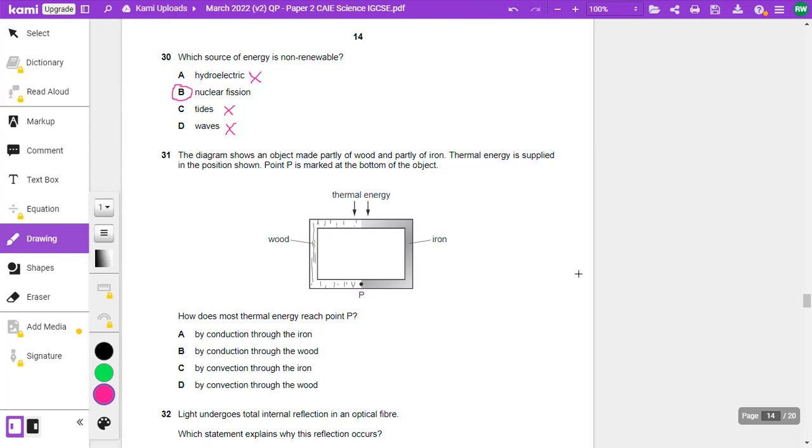All right, let's do question 31. The diagram shows an object made partly of wood and partly of iron. Thermal energy is supplied in the position shown. Point P is marked at the bottom of the object. How does most thermal energy reach point P? Well, wood is an insulator, and iron is a metal, and then for a conductor. And so therefore, most of the thermal energy is probably going to flow through the iron by... So it's either of those two. It's going to flow through iron by conduction. And so the answer is A.